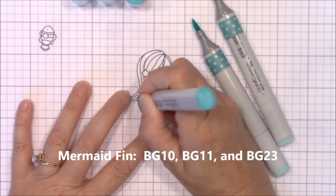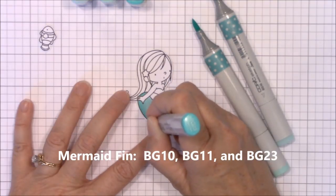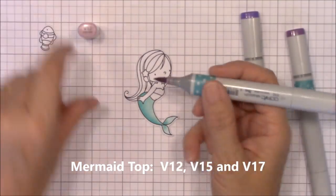I used three blue greens for the mermaid fin: BG10, BG11, and BG23.